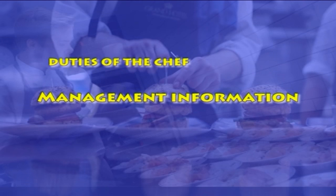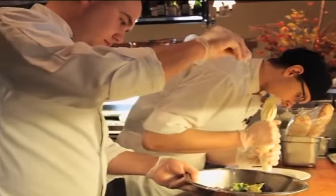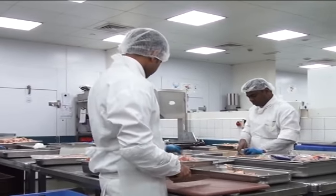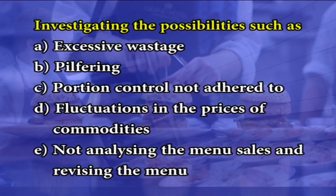Management information: as an administrator, the chef is responsible for keeping the management informed on the efficiency of the kitchen operation. Statistical data is provided so that the budget and forecast for future operations can be planned to assess the profitability of the kitchen. If the profit percentage varies from the set target percentage, then the chef takes corrective action by investigating possibilities such as excessive wastage, pilfering, portion control not adhered to, fluctuations in the prices of commodities, and not analyzing the menu sales and revising the menu.